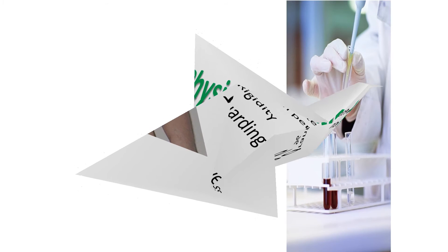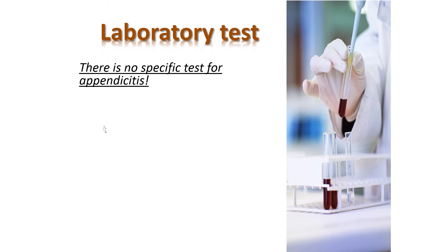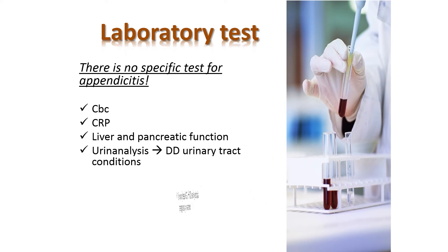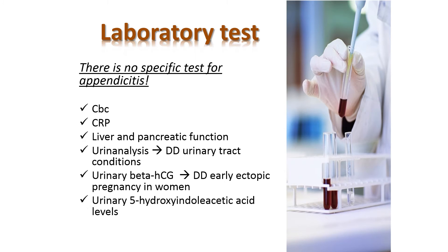Which laboratory tests should you order to confirm your diagnosis? Unfortunately, there is no specific test for appendicitis. You should definitely do a CBC and check the CRP levels. Liver and pancreatic function tests may be helpful. A urine analysis is done for differentiating appendicitis from urinary tract conditions. Urinary beta-HCG will help you differentiate appendicitis from early ectopic pregnancy in women.